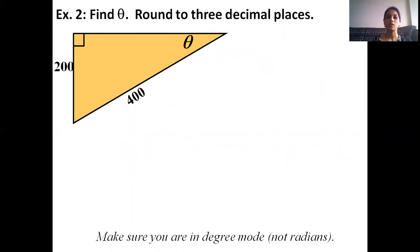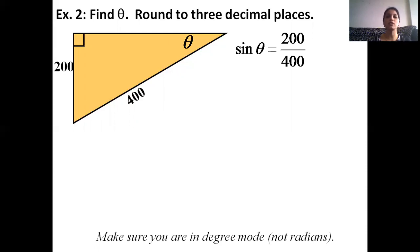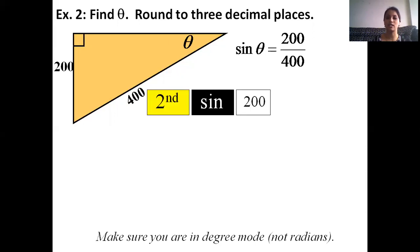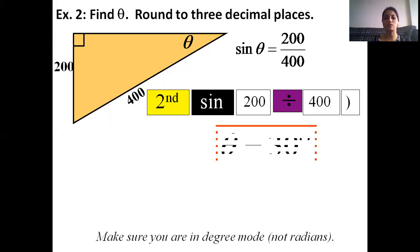Example number two: find theta rounded to 3 decimal places. In this figure, the hypotenuse is 400 and the opposite side of theta is 200. Using sin theta equals opposite over hypotenuse, sin theta equals 200 divided by 400, which equals 1/2. This implies theta equals sin inverse of 1/2, therefore theta equals 30 degrees.